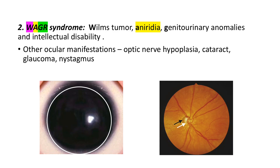WAGR syndrome, as the name implies, stands for Wilms tumor, aniridia, genitourinary abnormalities, and intellectual disability. The ocular manifestations are optic nerve hypoplasia, cataract, glaucoma, and nystagmus. As you can see in the first picture, the pupil is very large because the iris is completely missing — this is called aniridia. The picture beside it shows optic nerve hypoplasia, where the optic nerve is half the size it normally is.